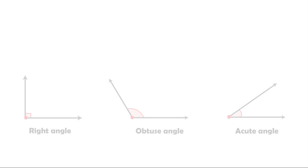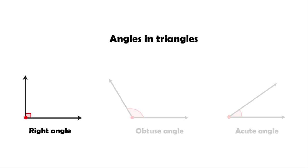Here we will look at angle properties for triangles. As we learned before, there are three types of angles: right, obtuse, and acute.